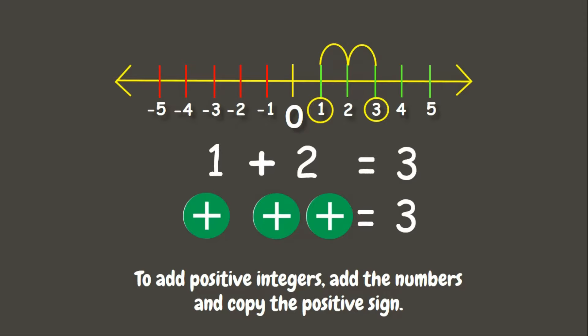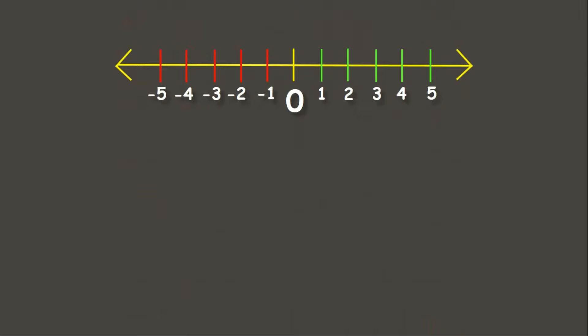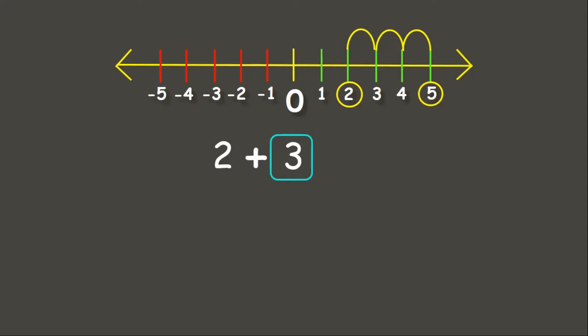Now let's try another one. Let us solve 2 plus 3. Our first integer is positive 2 and we add positive 3. Since it is positive, we are going to move 3 units to the right on our number line: 1, 2, 3 — and that gives us positive 5. Therefore, positive 2 plus positive 3 is positive 5.